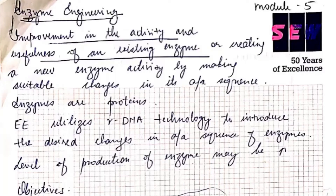Enzyme engineering means improvement in the activity and usefulness of an existing enzyme, or creating a new enzyme activity by making suitable changes in its amino acid sequence. That means we are altering an existing enzyme or creating a new enzyme by altering the amino acid sequence.